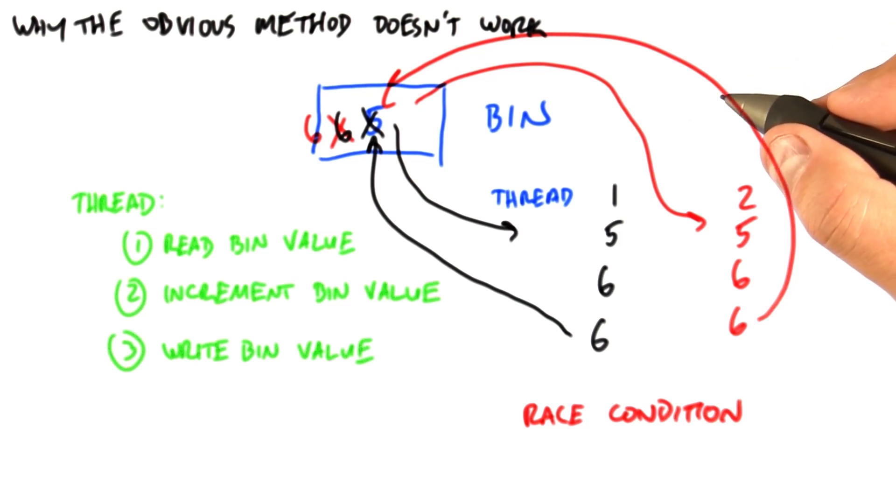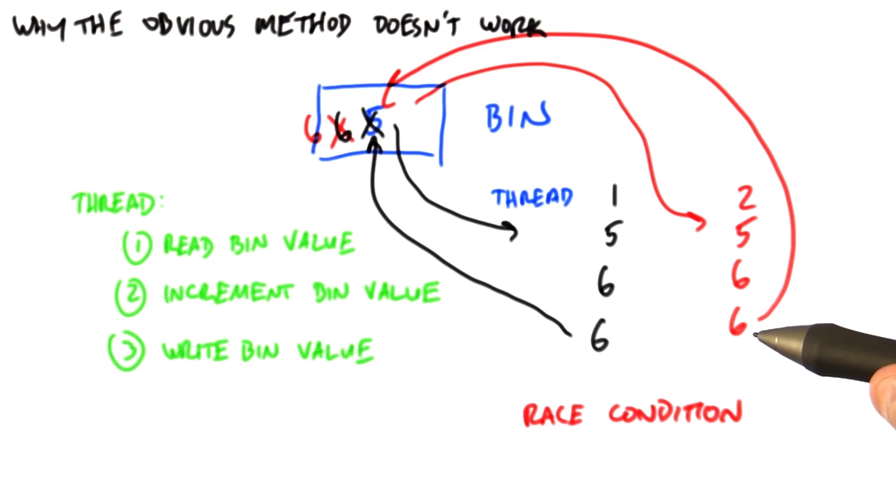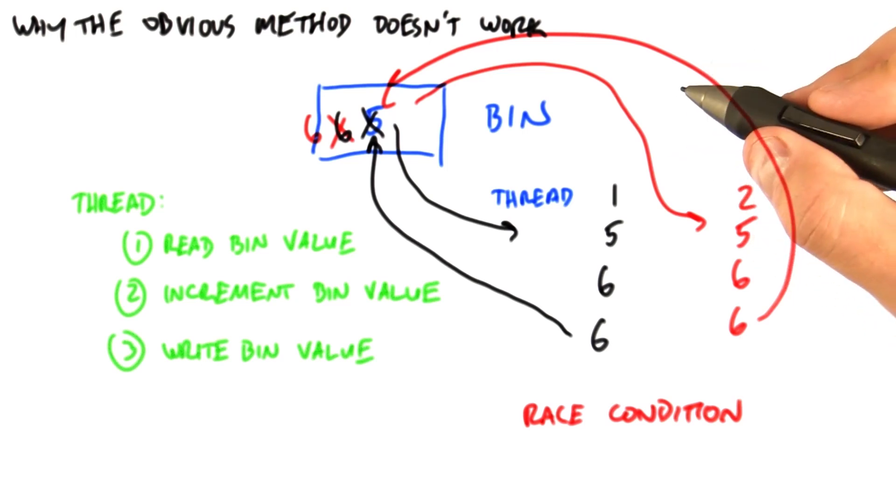Note that this is not going to happen in the serial code. Because in the serial code, each iteration of the loop runs separately, and there's no danger of one thread's code running at the same time as another thread's code. So the simple solution doesn't work. Now let's look at three different ways that we might implement this in parallel that will work. All three of these methods are good parallel methods, none are obviously better or worse, and we'll talk about their pros and cons as we describe them.